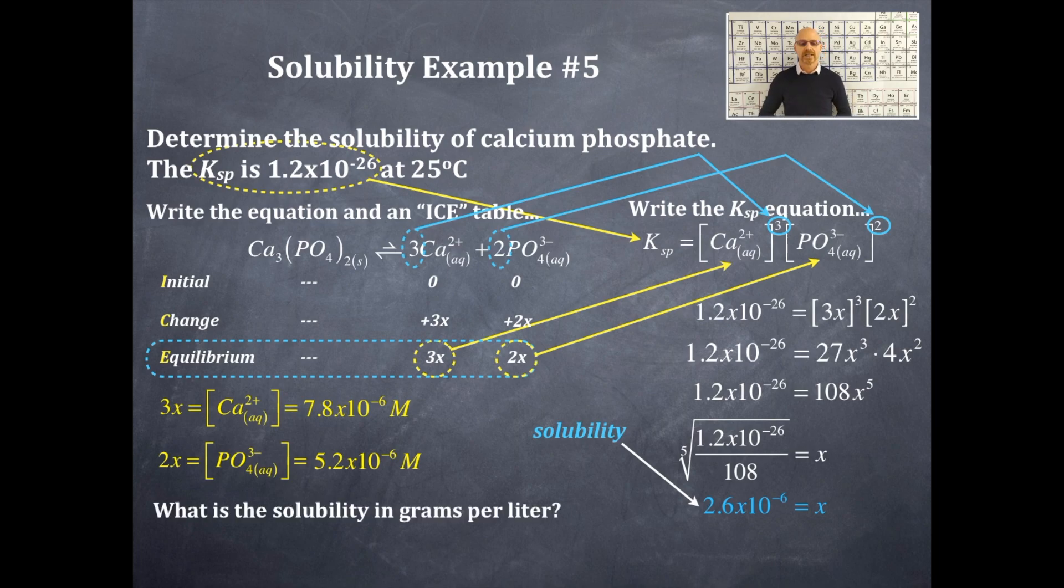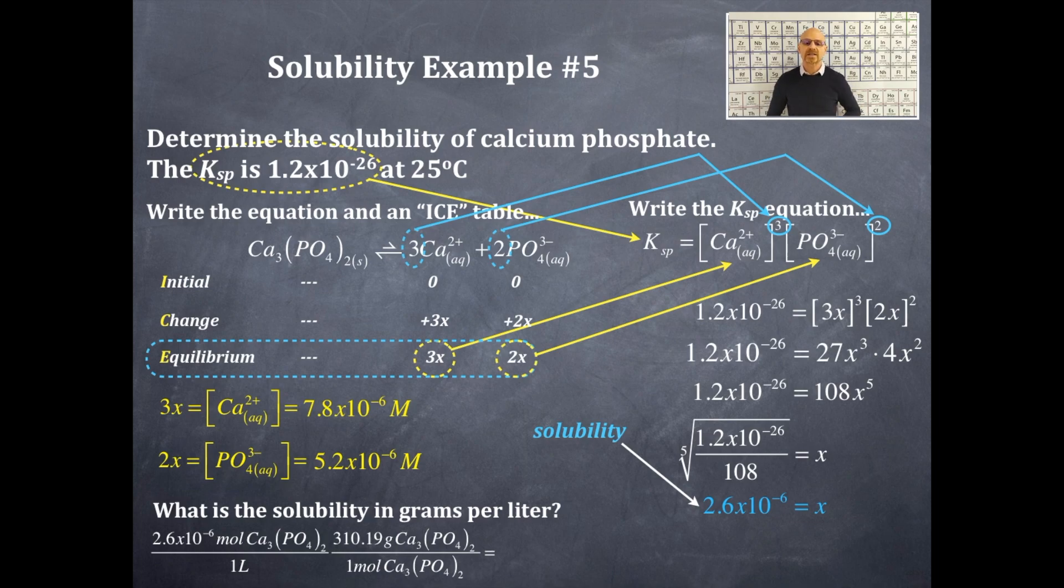I got one more thing we're going to do. We're going to determine the solubility in grams per liter. So now we're going back to the value of x which is solubility. That is moles per liter and I'm going to use the molar mass for calcium phosphate to get it in grams per liter. So I'm going to take my 2.6 times 10 to the negative 6, multiply this by the molar mass of calcium phosphate which is 310.19 grams per mole. You should see that the moles cancel out. I'm left with grams per liter. I was looking for solubility in grams per liter here as an added bonus problem and this is going to equal 8.1 times 10 to the negative 4 grams of calcium phosphate per liter.